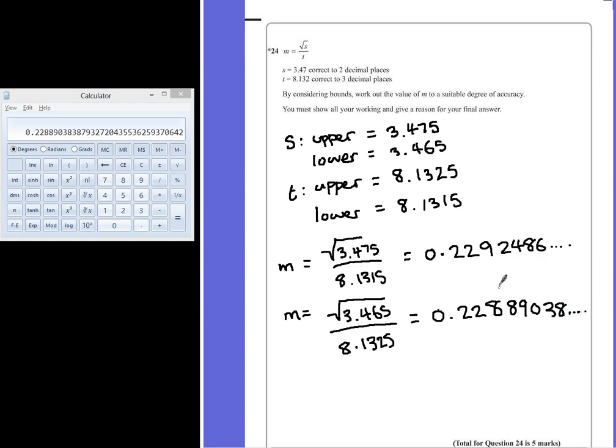So they're the highest and the lowest possible values that this calculation could give us. We're asked to say by considering bounds, work out M to a suitable degree of accuracy. So if we wanted to give a number that both of these could be rounded to, we could say 0.2, 0.23, but also it could go to three decimal places, which would be 0.229 in both cases.